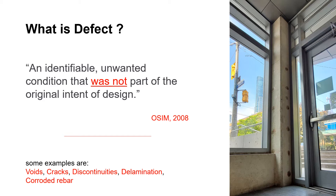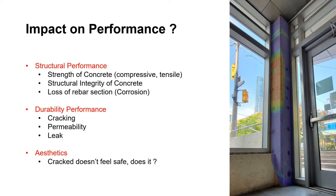A defect is an unwanted condition that was not part of the original intent of design. The most common forms of defects are cracking, subsurface voids, and discontinuities such as lamination and corroded steel rebar. Defects may or may not impact the performance of the structure — some might only affect structural integrity, while others impose durability concerns as well.